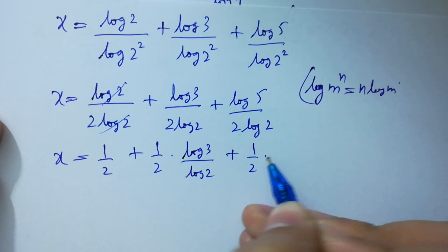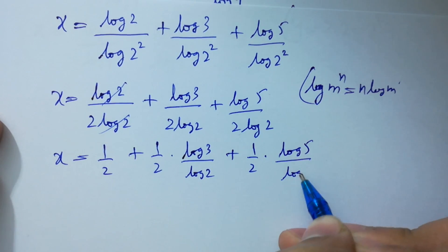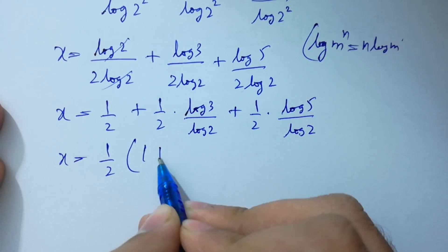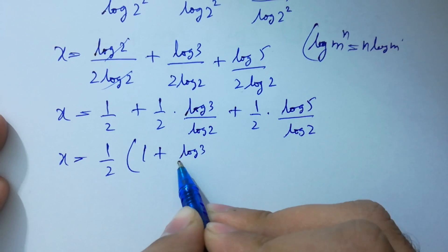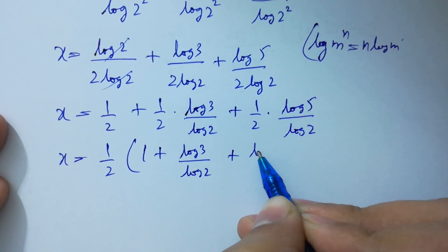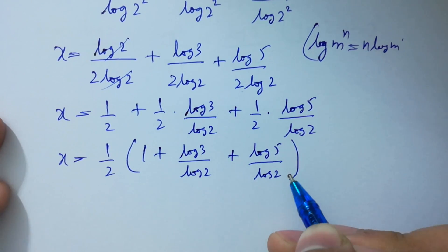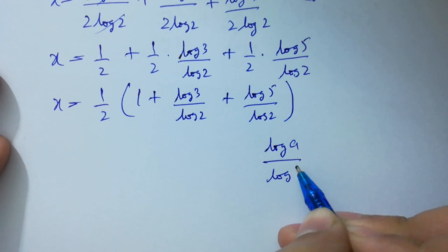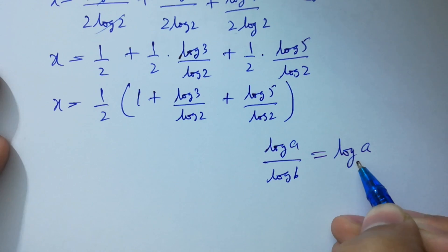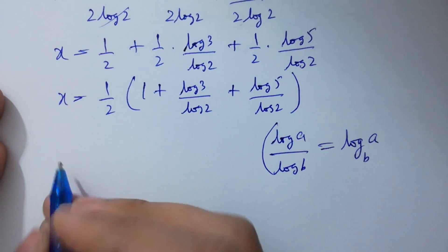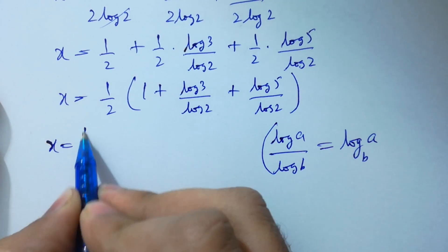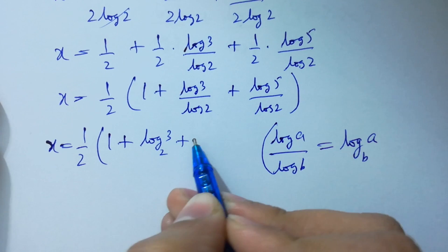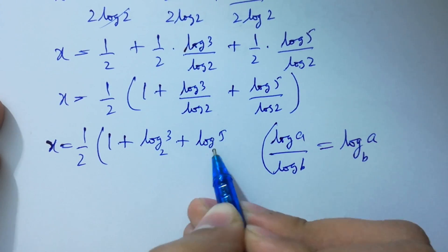Factoring out 1 over 2: x equals (1 over 2)(1 plus log 3 over log 2 plus log 5 over log 2). Since log a over log b equals log a to the base b, x equals (1 over 2)(1 plus log 3 to the base 2 plus log 5 to the base 2).